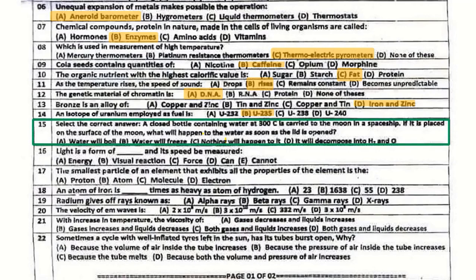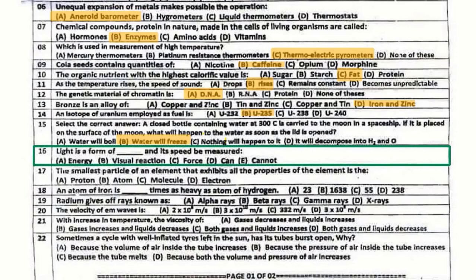Question number 15: A closed bottle containing water at 300 degrees centigrade is carried to the moon in a spaceship. If it is placed on the surface of the moon and the lid is opened, what will happen to the water? The correct answer is: the water will freeze.